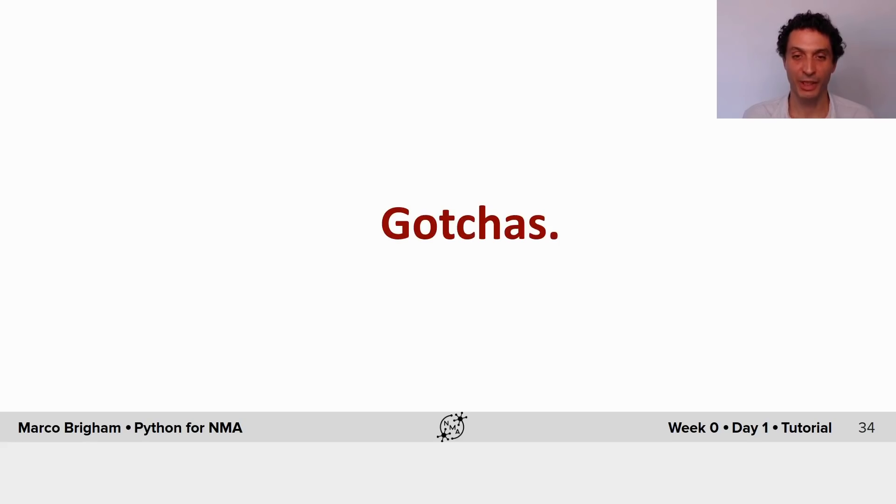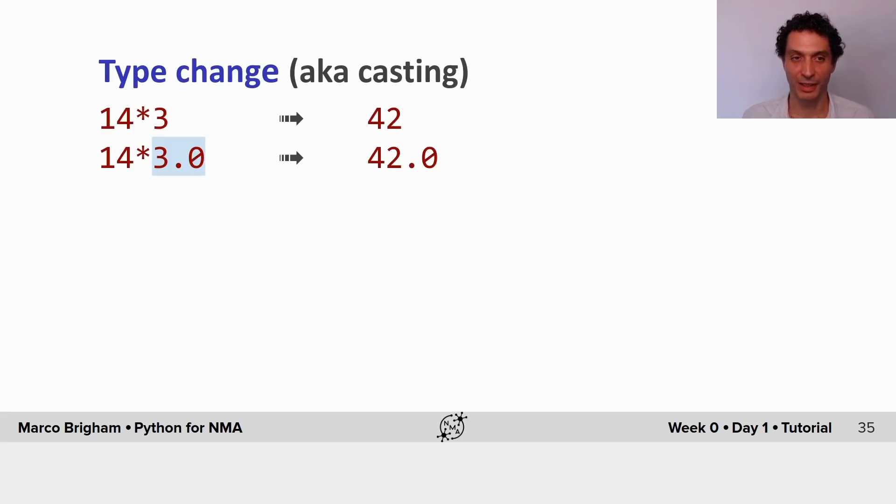So some things we have to be aware about numbers and operations. One of them is type change, also known as casting. So here we multiply two integers and the result is an integer. But here we multiply an int by a float and the result is a float.